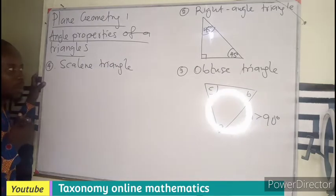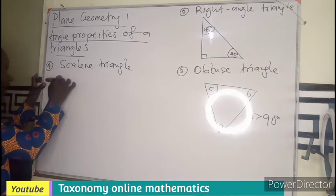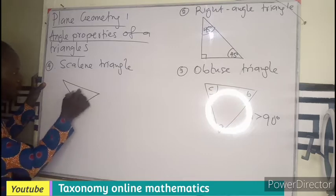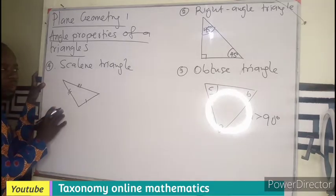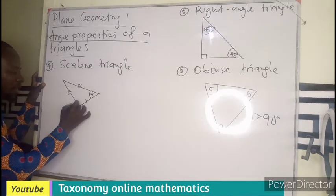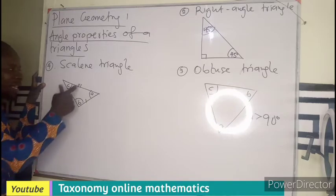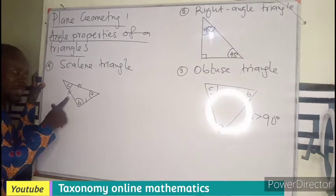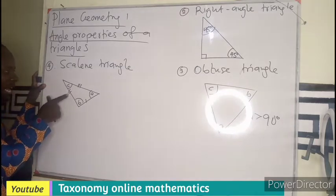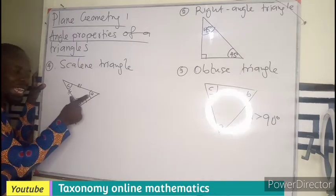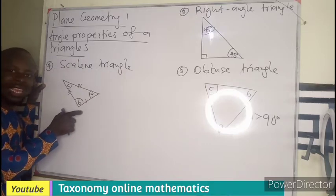Then we have a scalene triangle. A scalene triangle has all its angles different from one another. When all the sides are different, all the angles will also be different. The longer the side, the bigger the opposite angle — so angle B will be bigger than angle A, and angle A bigger than angle C.